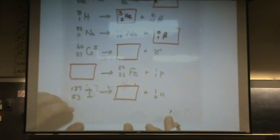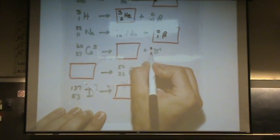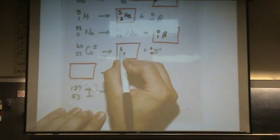Okay, let's try the next one. Gamma, I didn't give it to you, but you need to know is 0, 0. So this has to be 27 and 60.